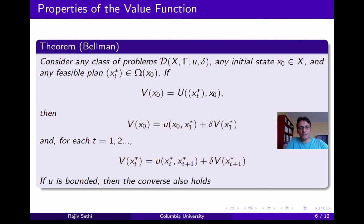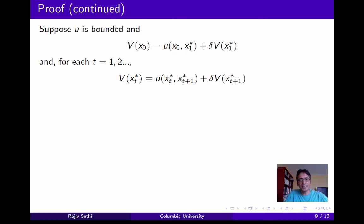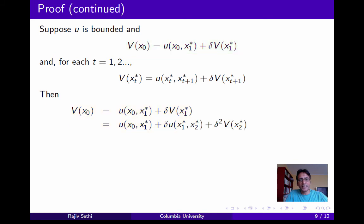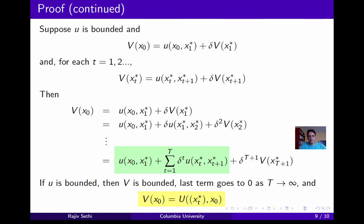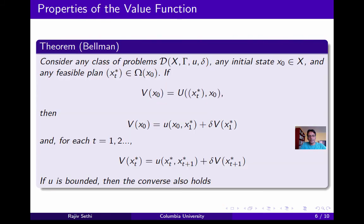Now we show that if u is bounded, the converse also holds. Suppose u is bounded and V can be expressed in the recursive form. Then V(x0) = U(x0, x1*) + delta·V(x1*), and after t substitutions we get V(x0) as a finite sum plus a remainder term involving delta^t·V(xt*). Since u is bounded, V itself is bounded, so this remainder converges to 0 as t → ∞. The remaining terms converge to the payoff from following xt*. Therefore V(x0) equals the payoff from following x*, completing the proof that x* is optimal.